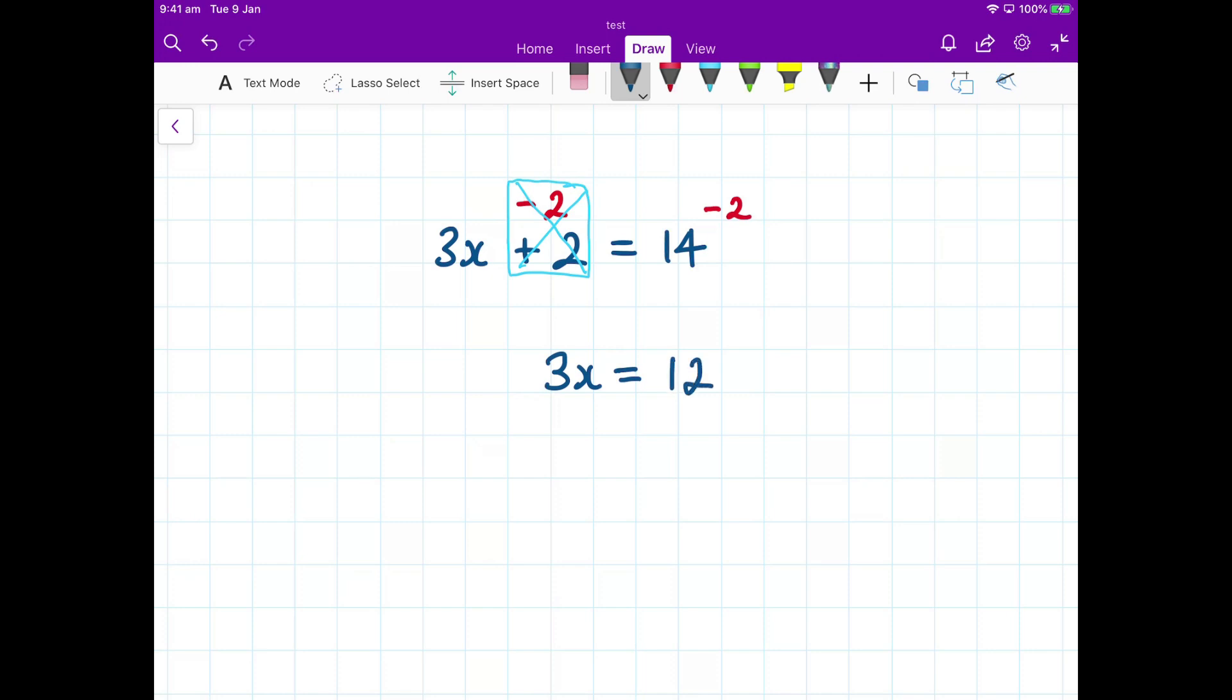So we've got rid of that plus 2, that friend. Now we need to get rid of this 3 here. Now that 3 means 3 multiplied by x. And the inverse of multiplication is division. So what I need to do here is to divide by 3. And if I do it to the left hand side, I must do it to the right hand side. So I have to divide by 3 here as well.